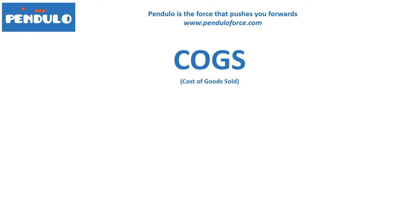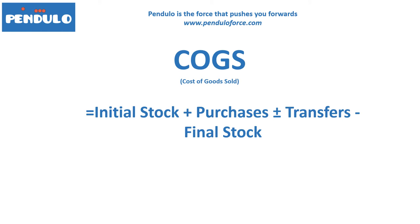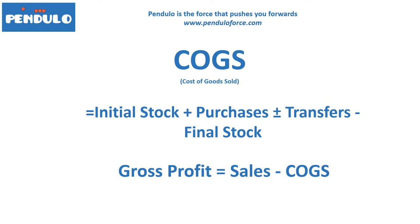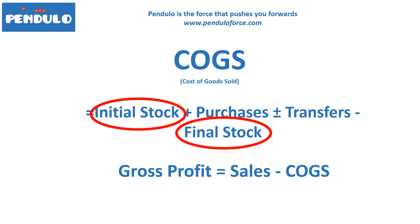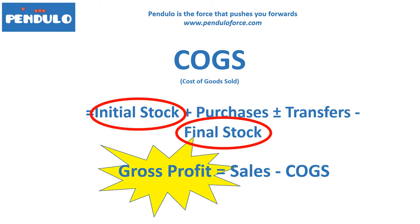As we mentioned in previous videos, the cost of goods sold is equal to initial stock plus purchases plus or minus transfers or adjustments, minus the final stock. We know that the gross profit is equal to the sales minus the cost of goods sold. So as we can see, the initial and final stock are going to have a big impact on our gross profit.